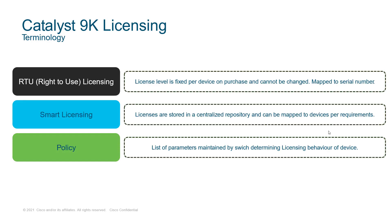There are certain terminology that we need to be aware of before we start diving into smart licensing using policy. The first one is right to use licensing or RTU. This is the old model of licensing that we used on our boxes before smart licensing was introduced. In this model the license level is fixed per device on purchase and it's very difficult to change the license level once the purchase is done. Also the licenses themselves are node locked to the device and mapped to the serial number.